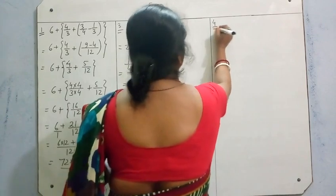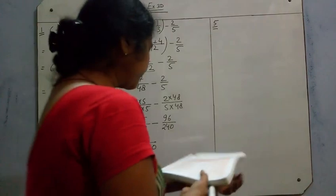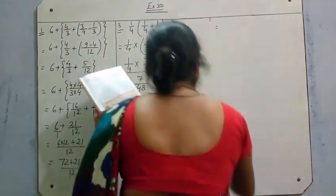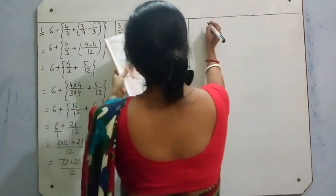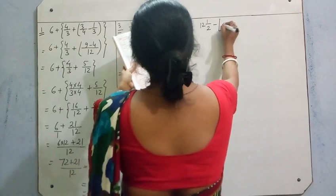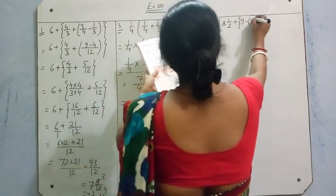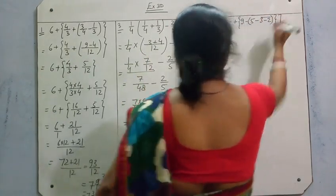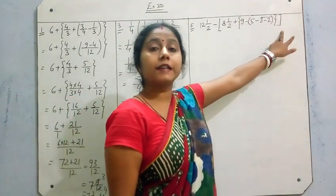Now question number 5 — I am doing all the odd questions, and this margin is going to be a little bigger because this question is a little more complex. The question is: 12 and 1/2 minus [8 and 1/2 plus {9 minus (5 bar minus (3 minus 2))}]. You can see all the brackets here: vinculum, small bracket, curly bracket, and square bracket.